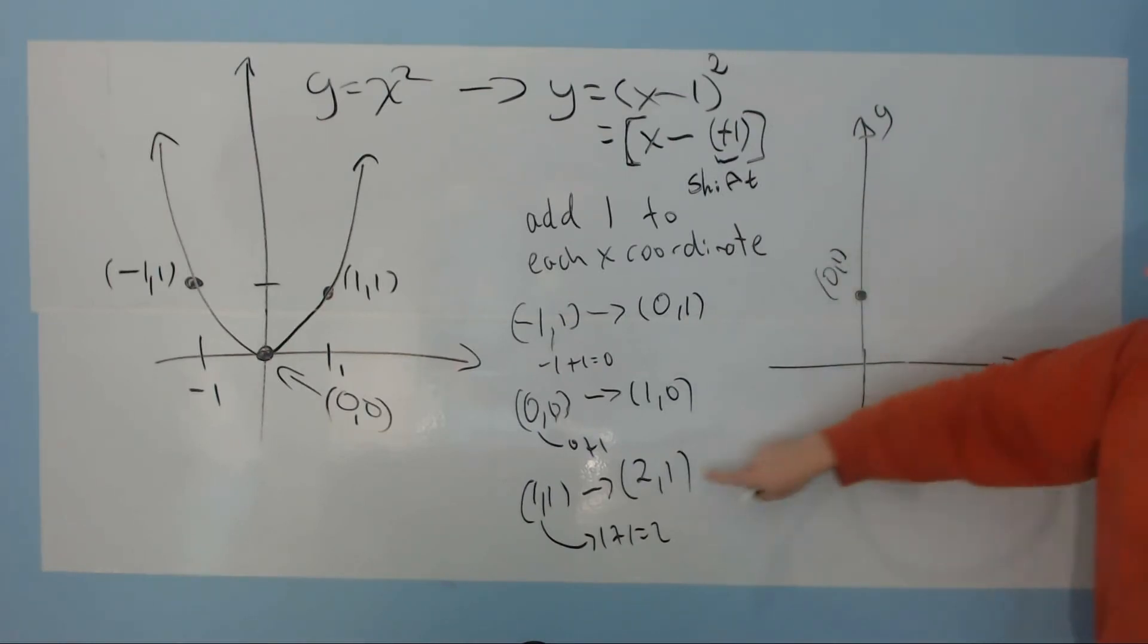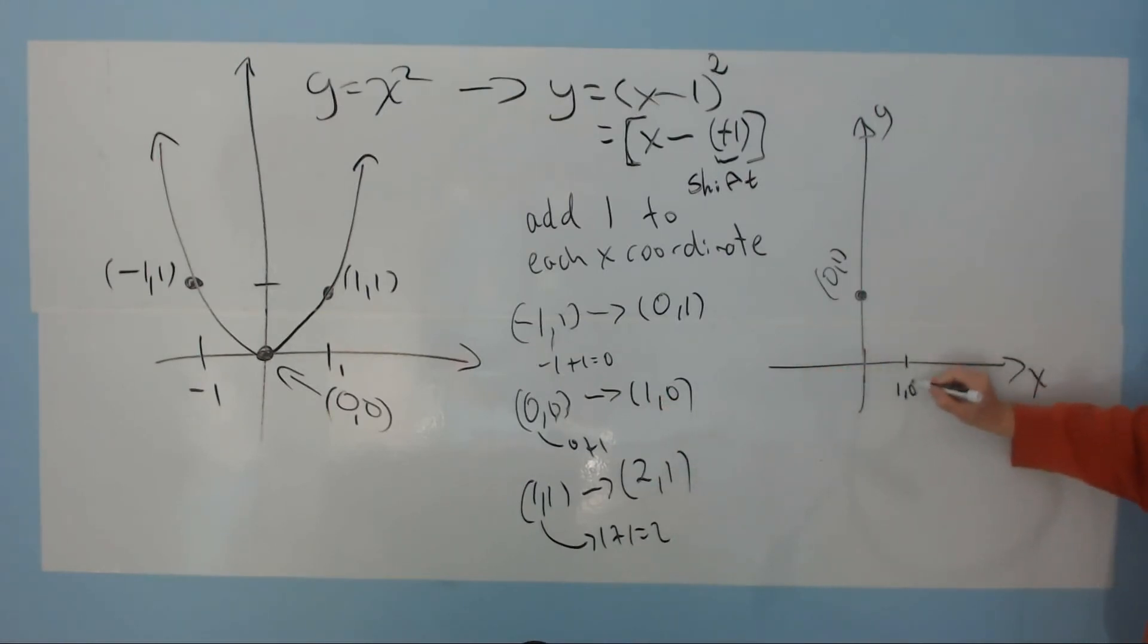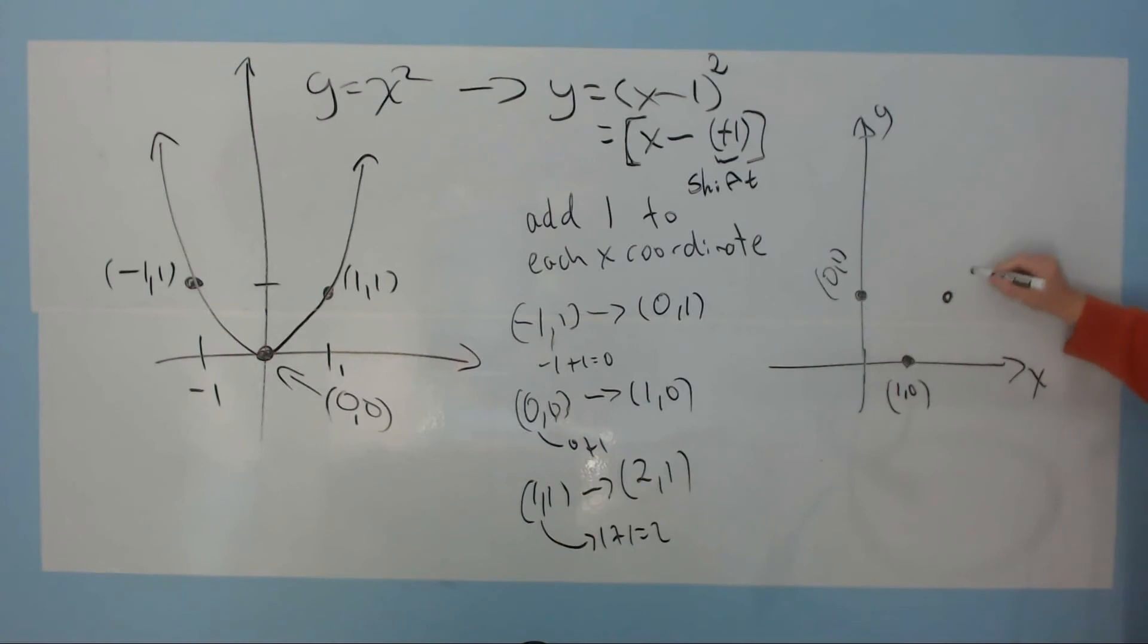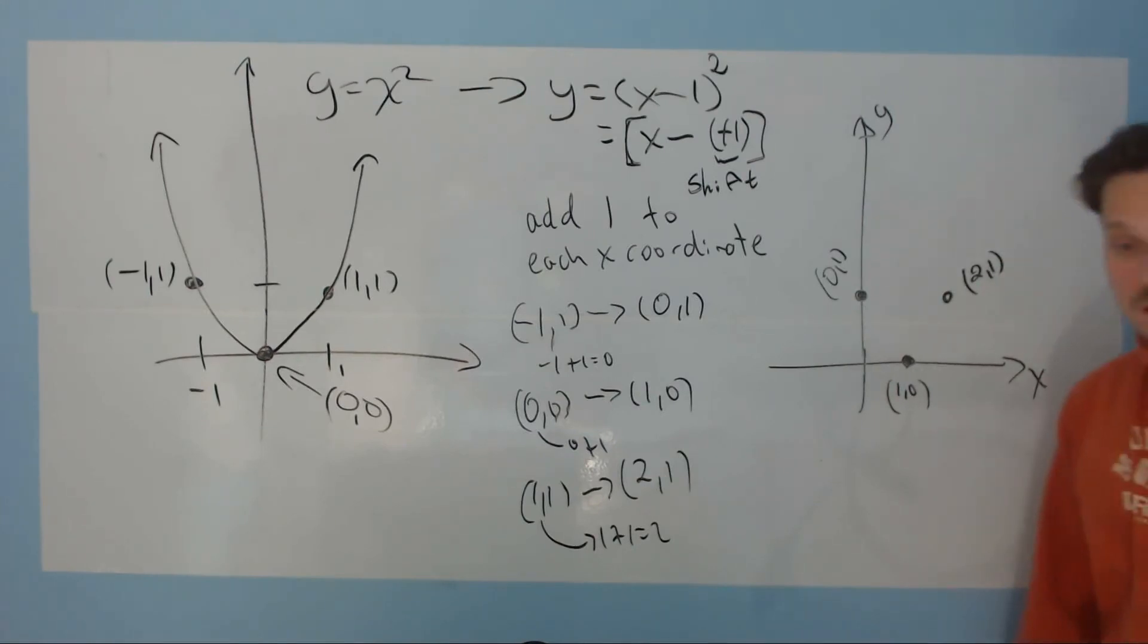That, the new second point here, was 1, 0. So I mark that over here, 1, 0. And the last point is 2, 1, that new point. So that I'm going to mark over here. That's 2, 1. That position.